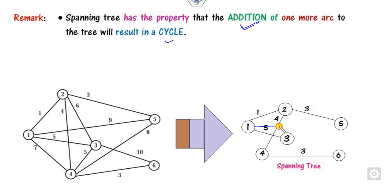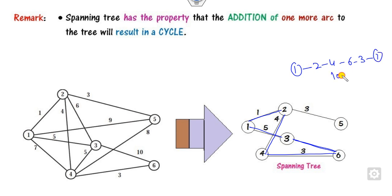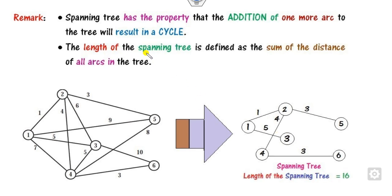For example, if you add arc 1-5, it forms a cycle — you can start from 1 and return to 1 again. Similarly, adding another arc gives 1-2, 2-4, 4-6, 6-3, 3-1 — a loop starting and ending at 1. So a spanning tree uses the minimum number of arcs, and adding any one more always forms a cycle. The length of the spanning tree is the sum of its arc weights: 1 + 4 + 5 + 3, for example.